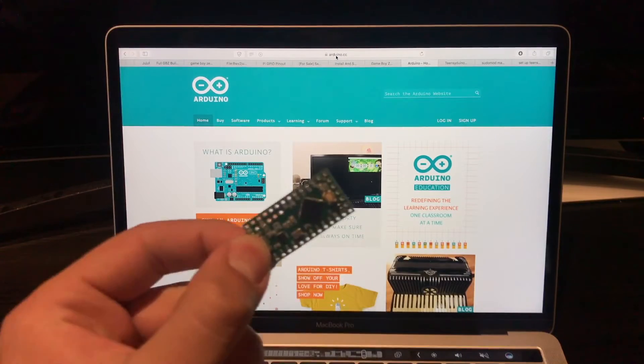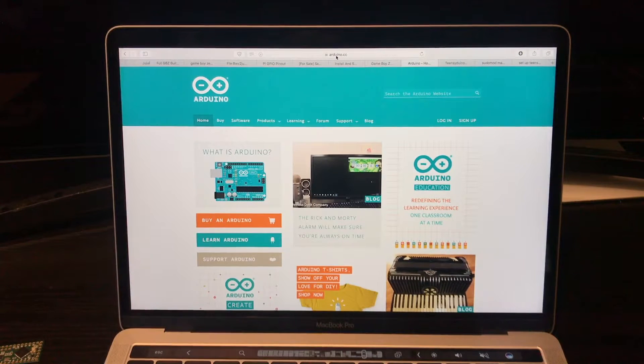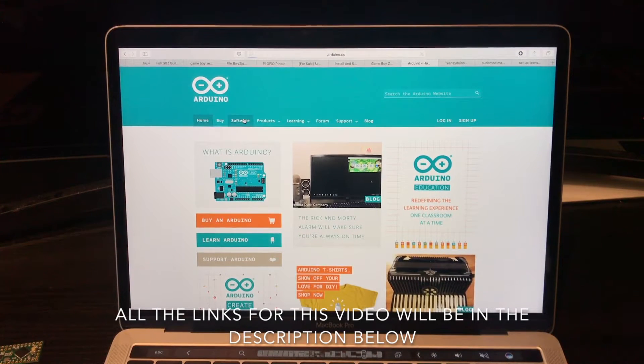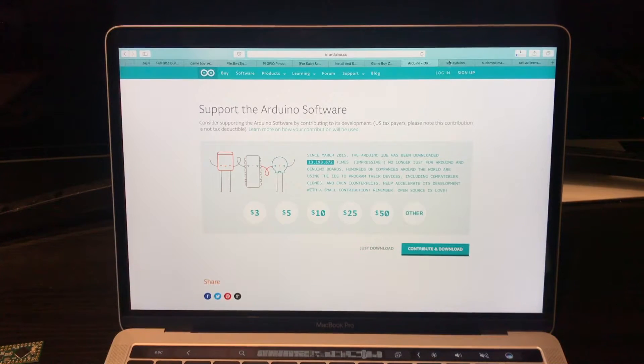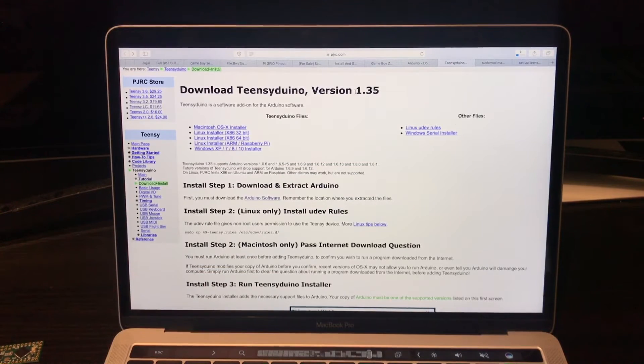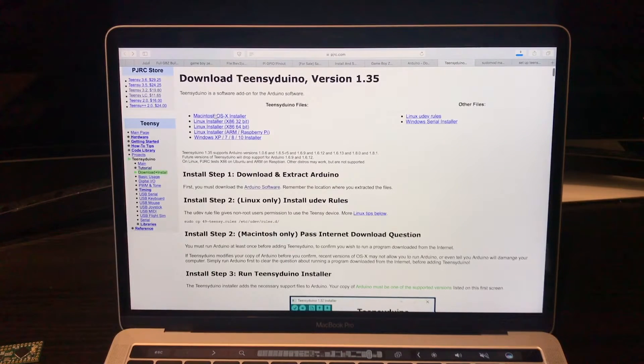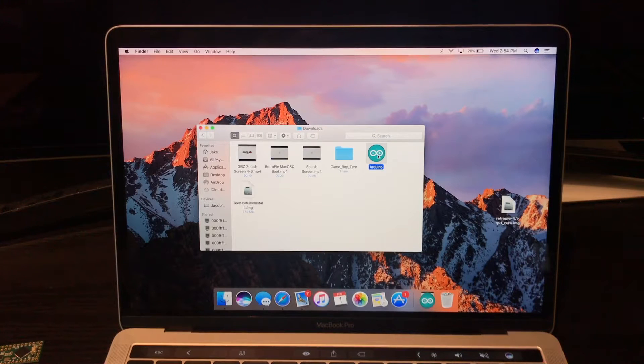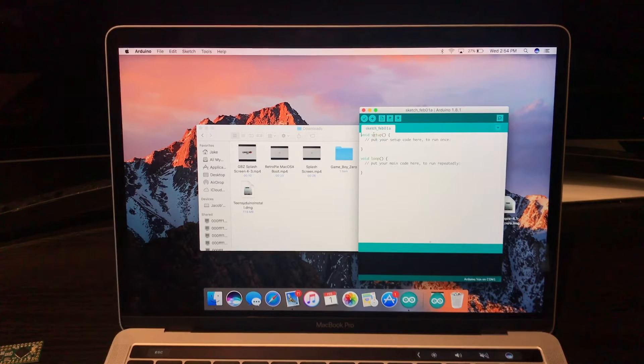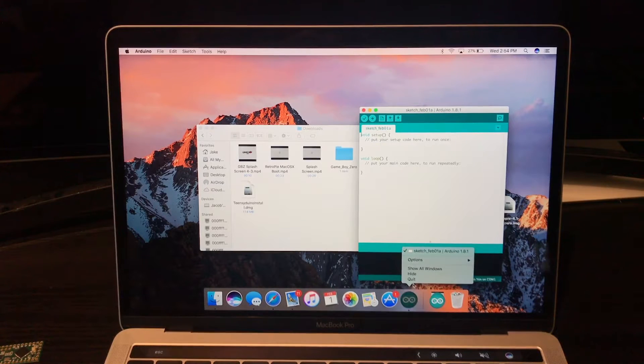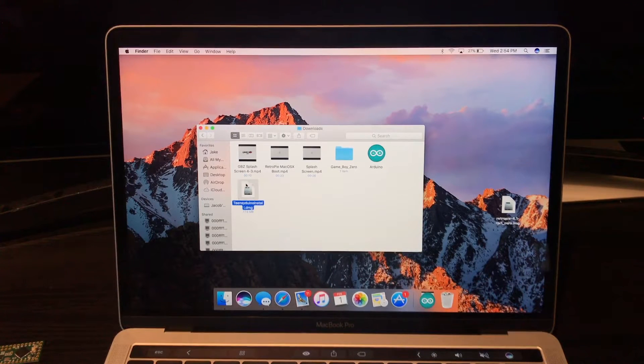The first thing we're going to do is program the Teensy. So what we're going to want to do is head over to arduino.cc, go to software, and then download the Arduino IDE for your operating system, click just download. And then you're going to want to head over to pjrc.com and download the Teensy Duino version 1.35, and then just select your operating system here.